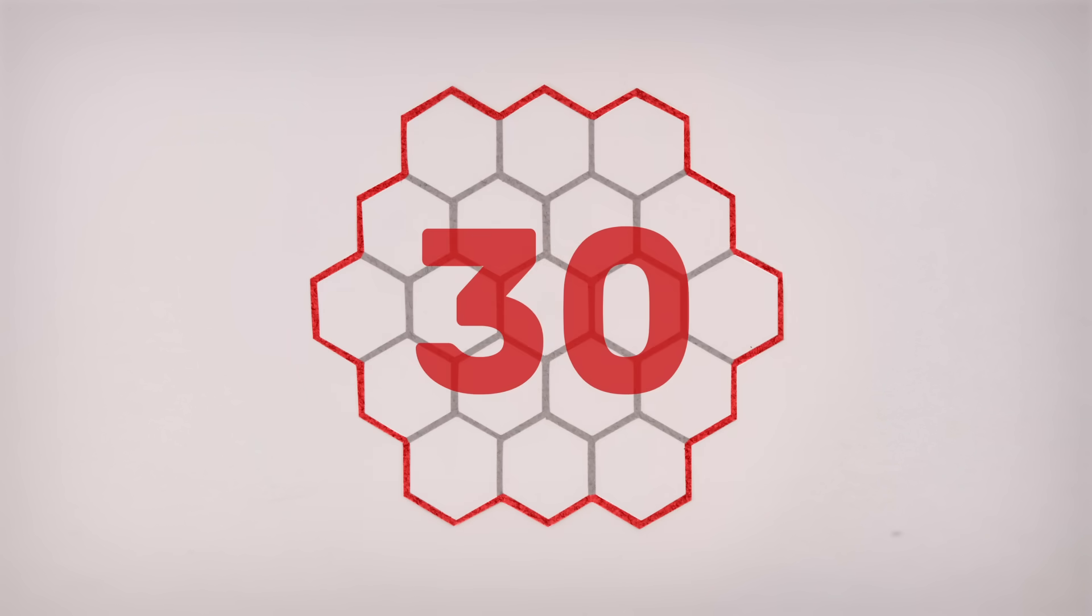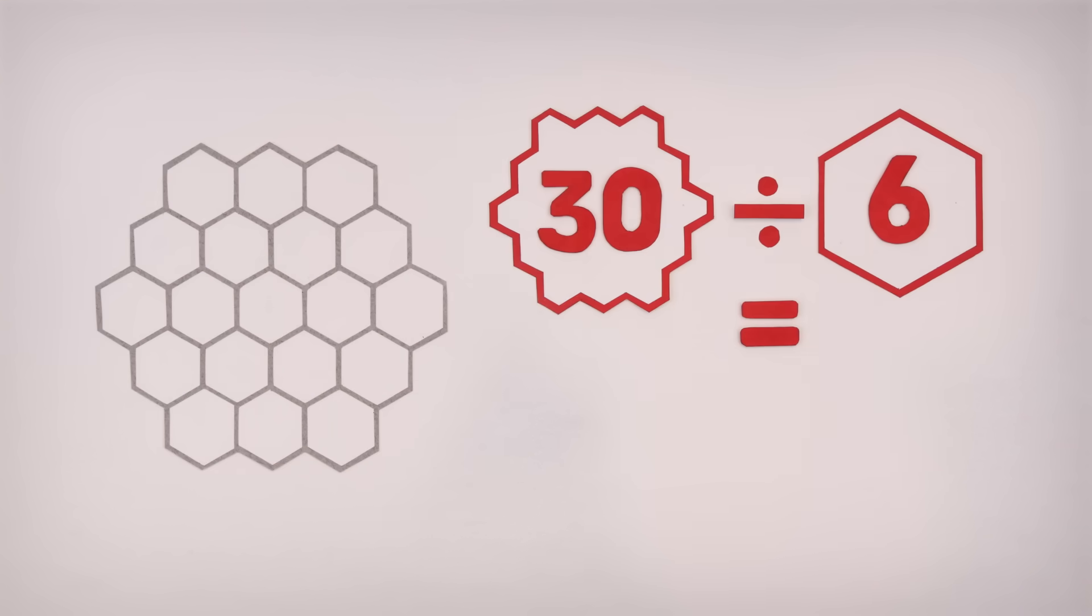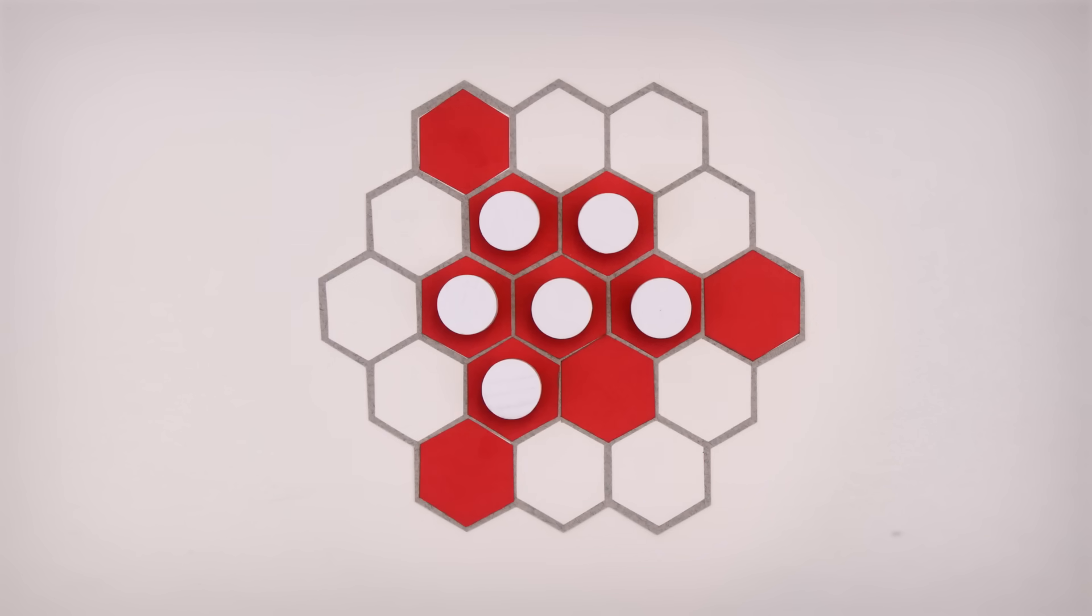The perimeter of this hive is 30, which means we'll need at least five bees to fill it in. With six, it'd be easy. Placing them like this would fill out the whole hive in just three steps.